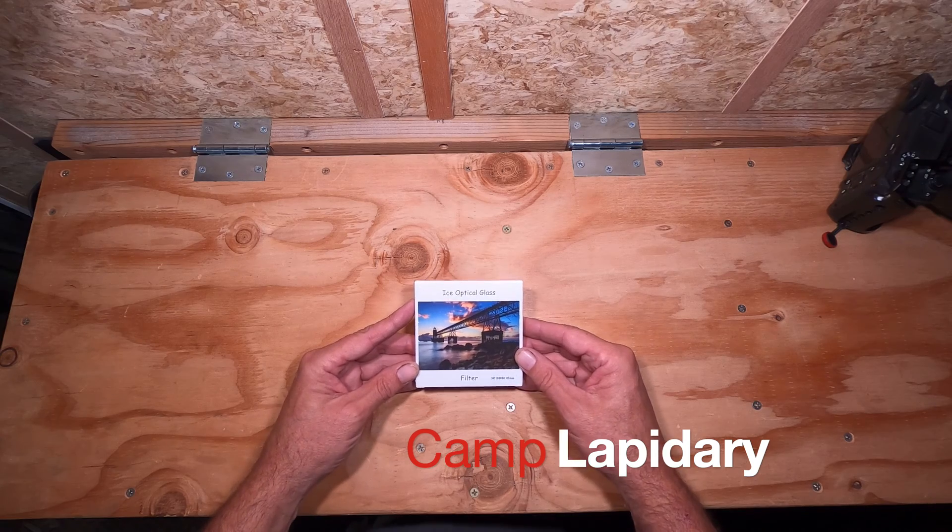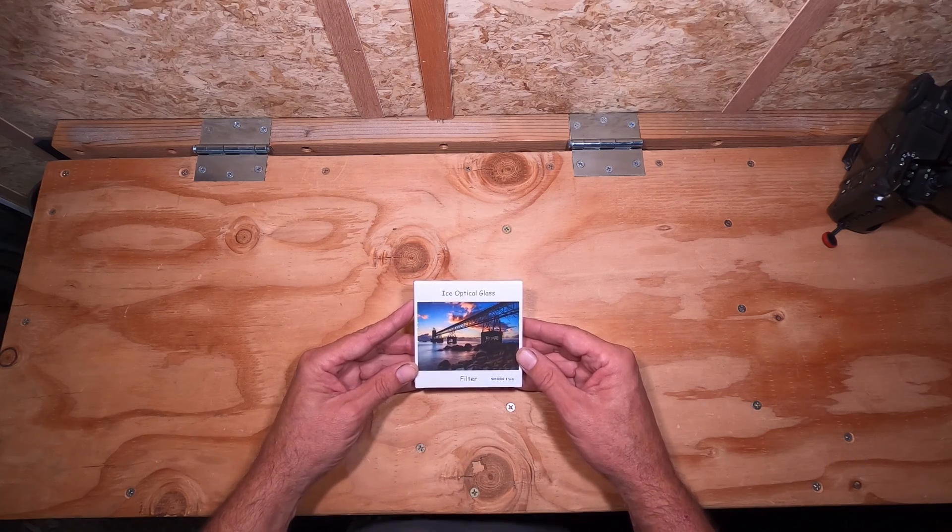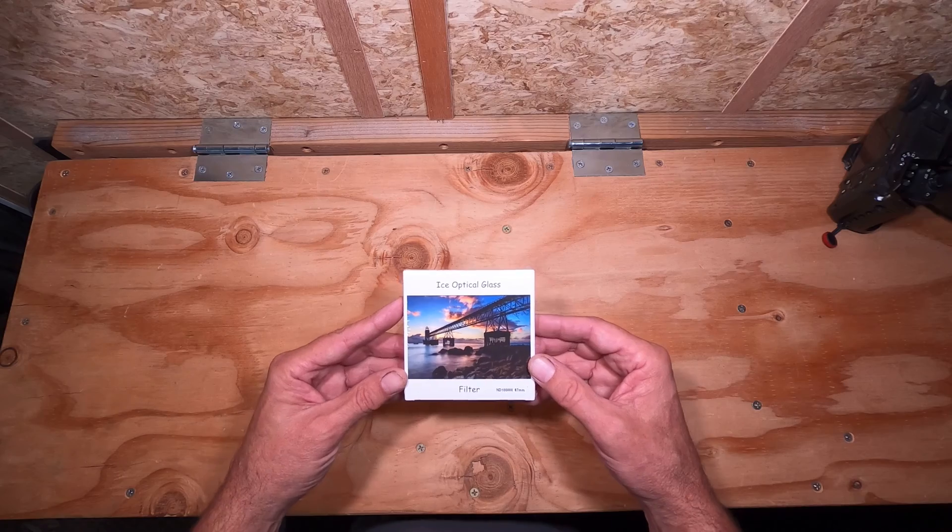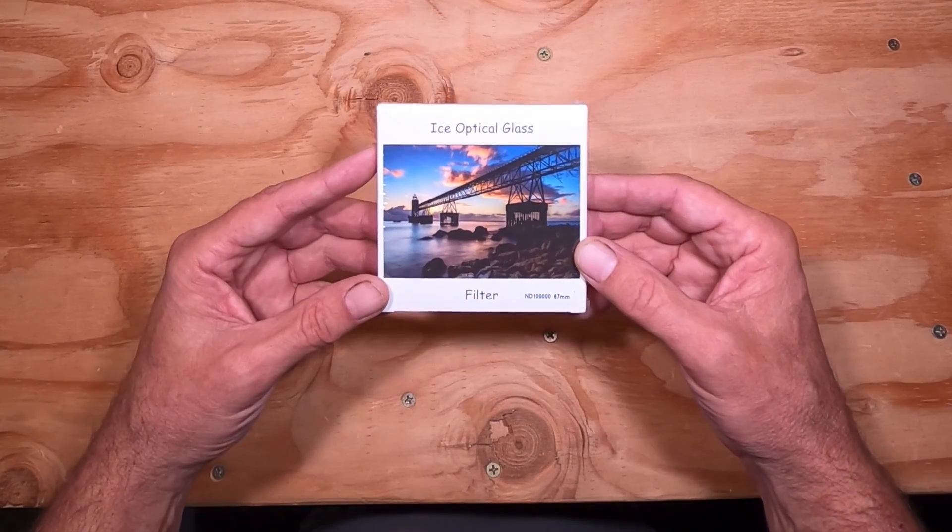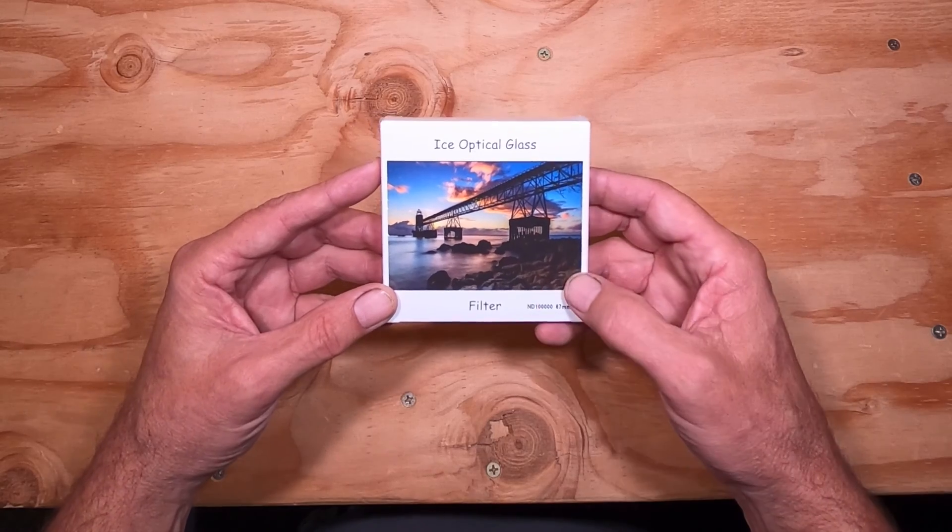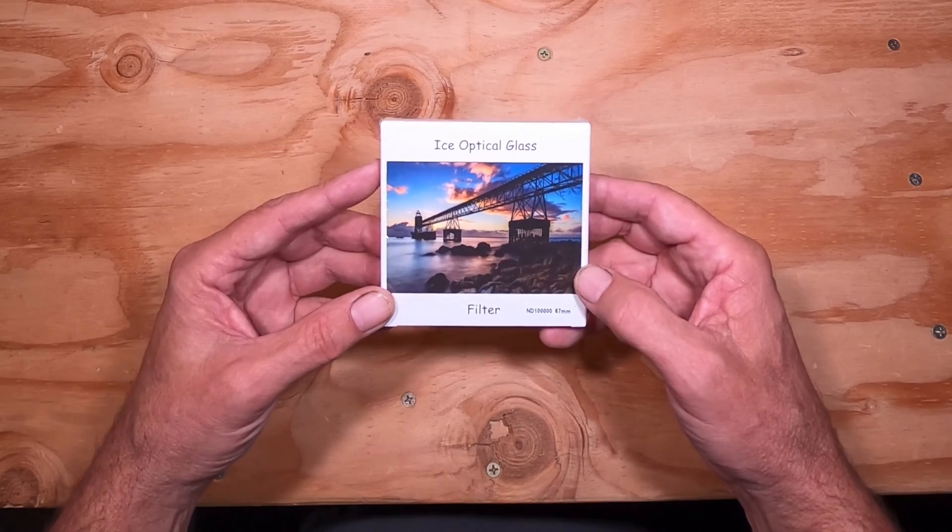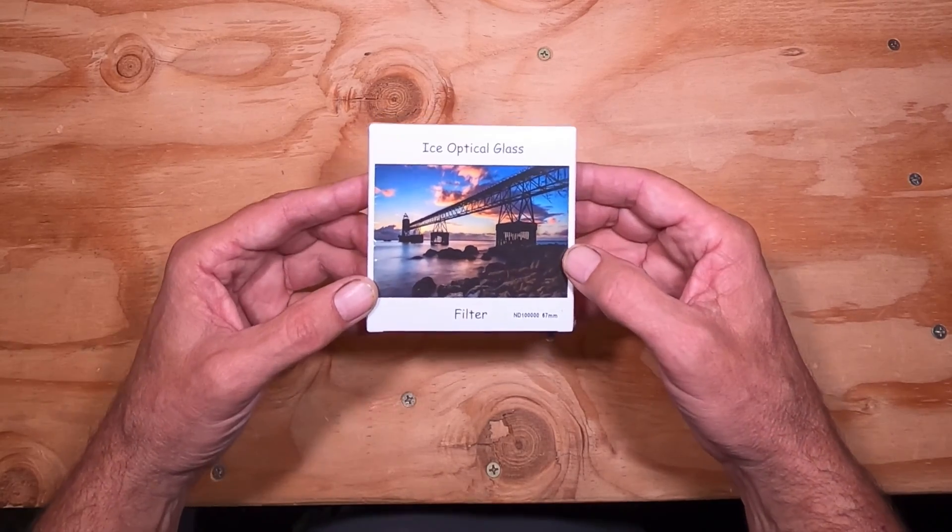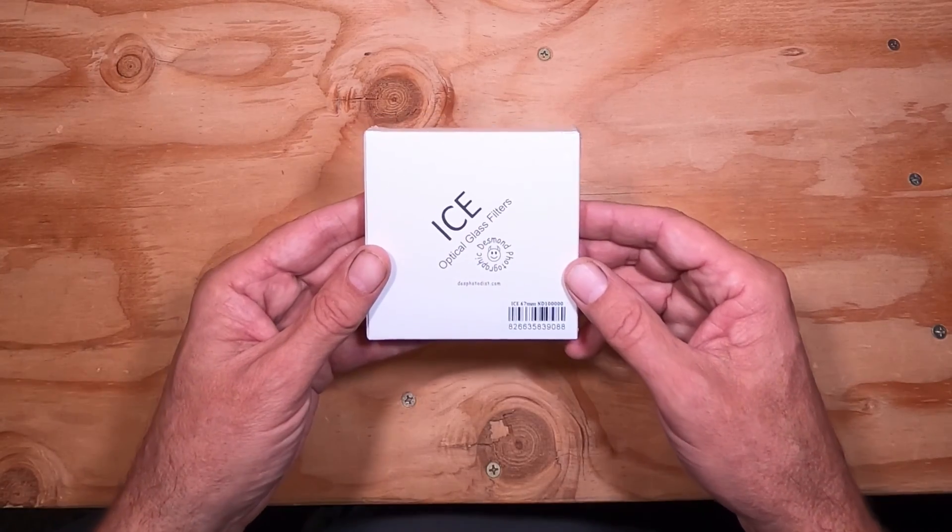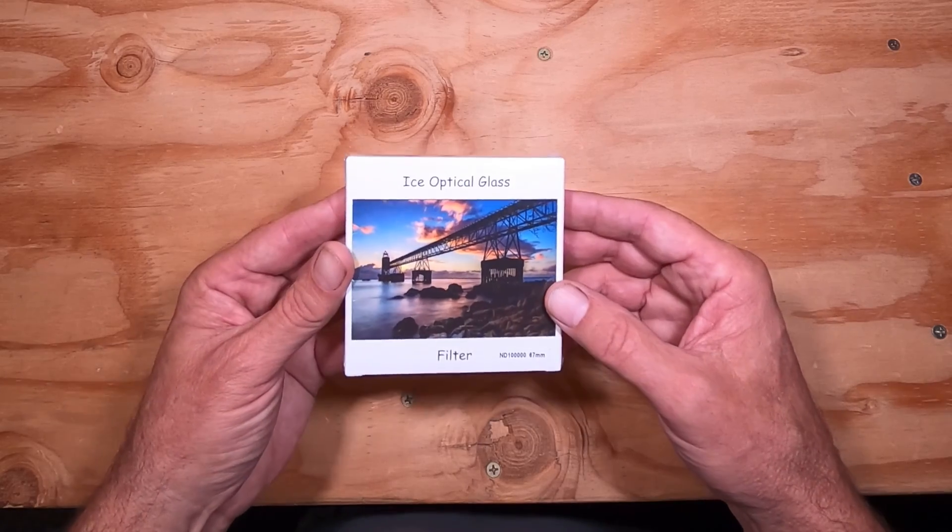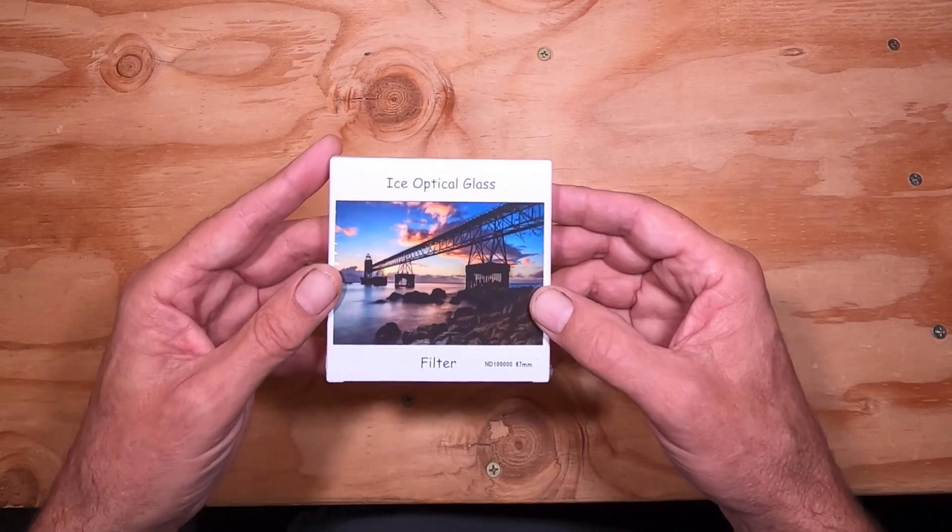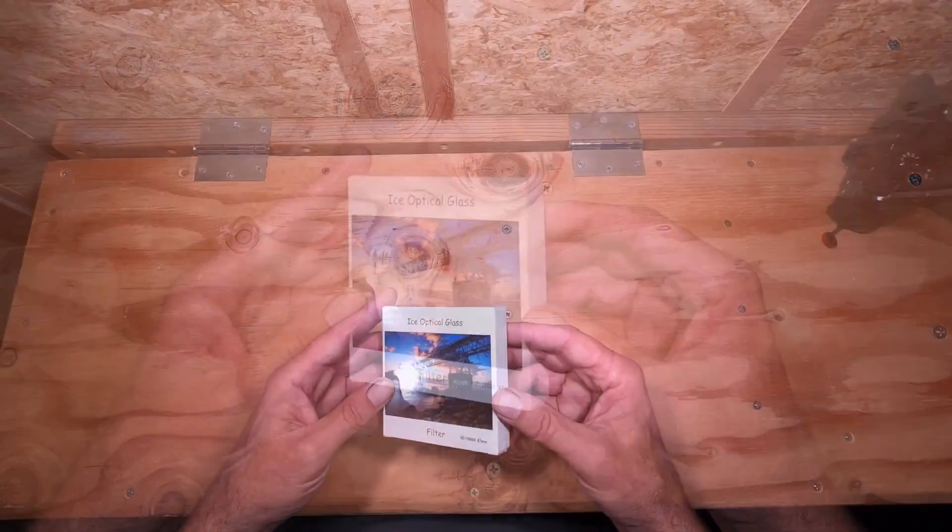Hello folks, my name is Mark. Welcome to my channel. Today we're going to be looking at this ND filter. It's an ND 100,000, 67 millimeter ICE optical glass filter. This is a 16 and a half stop ND filter. It's very dark.